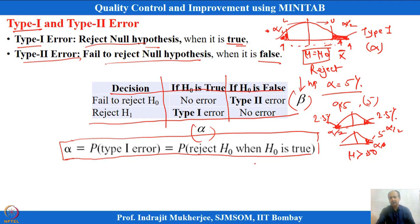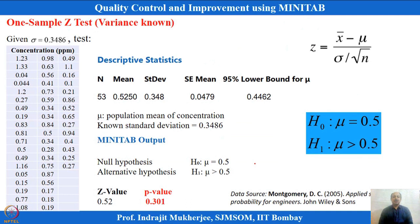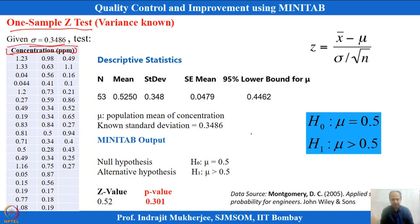Hypothesis testing is all about testing some statement — one will be null, one will be alternate. The first important test is the one-sample Z test. One example is taken where sigma is known — some concentration data — which we have also seen when defining the confidence interval. The data gives descriptive statistics: mean value, sample observations, X-bar calculated, standard deviation S, and standard error as sigma divided by root-n.